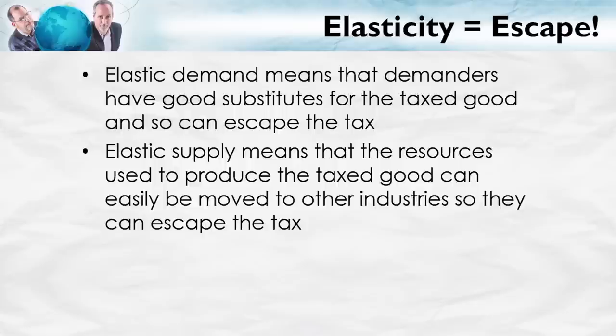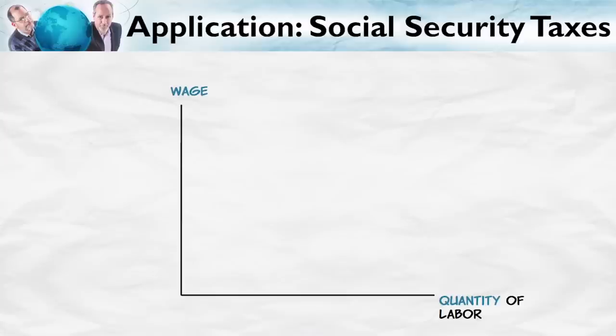What if the demanders and the suppliers are both pretty elastic? Well, somebody has to pay the tax — both sides can't escape the tax, at least if the good is going to be bought and sold. Therefore, the burden is determined by the relative elasticities. It's about which side has it easier to escape the tax. That side will pay less of the tax. The side which is less elastic will pay more of the tax, because that side finds it harder to escape.